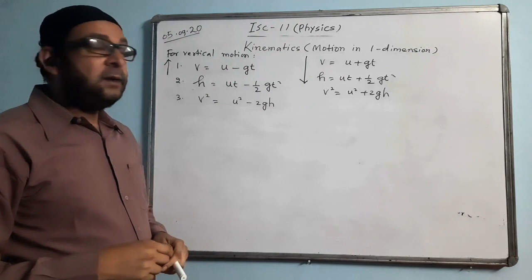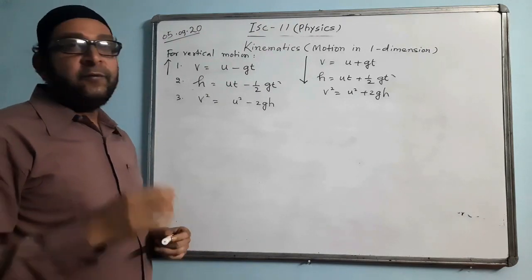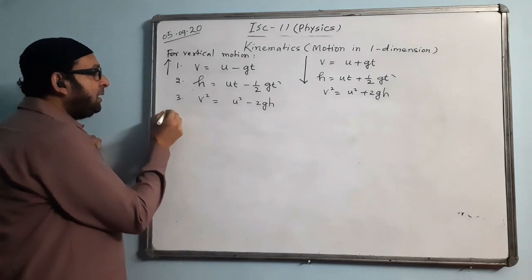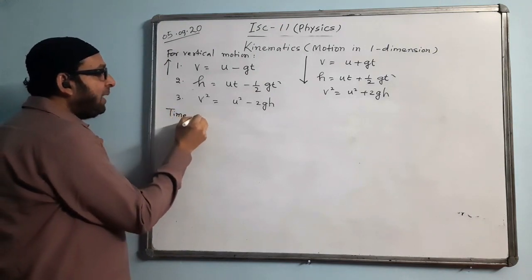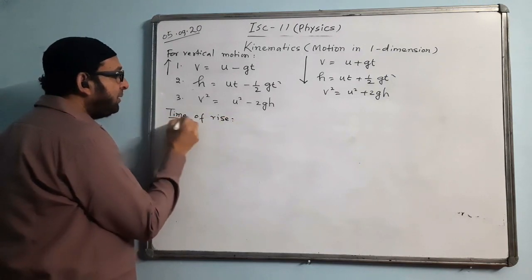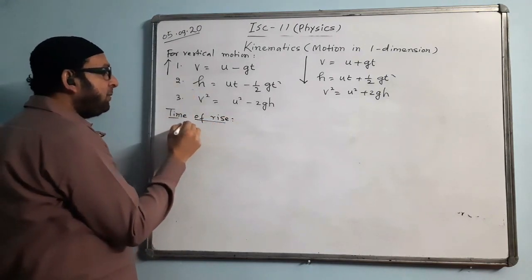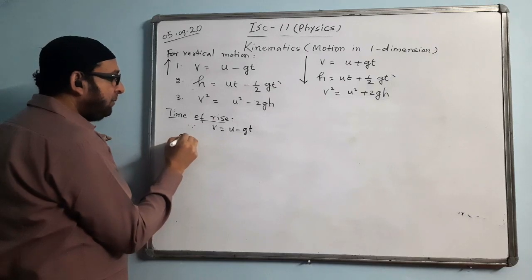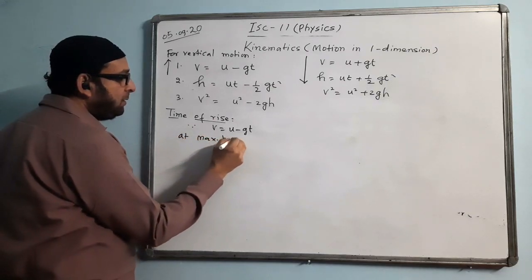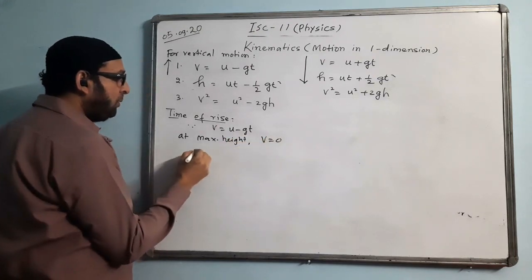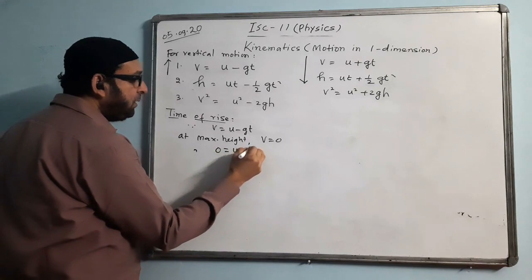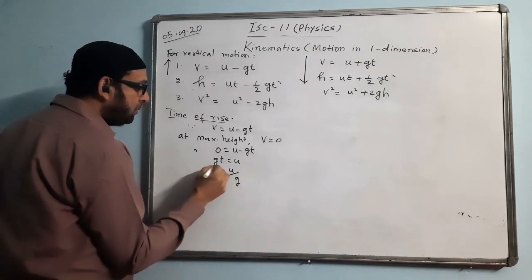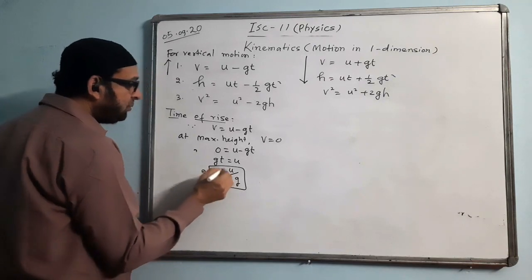Now we derive short formulas for maximum height and time of rise. For time of rise: the body is going up, so v = u − gt. At maximum height, v = 0. Substituting: 0 = u − gt, so gt = u, therefore t_rise = u/g. This is the formula for time of rise, and we can use it directly in problems.